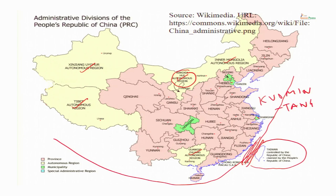There are also two special administrative regions, which were former European colonies returned to China. These two special administrative regions are Hong Kong and Macau. Hong Kong was ruled by the British and was returned to China in 1997. Macau was ruled by the Portuguese and was returned in 1999–2000. These are special administrative regions because China follows what is known as one country, two systems. Certain laws are followed in these SARs which the Chinese government does not interfere in, so they have a lot of autonomy.